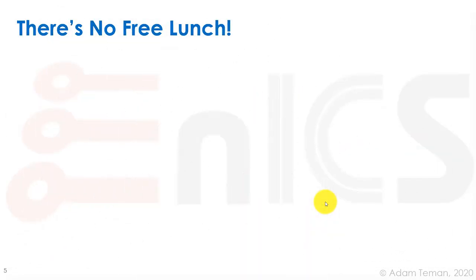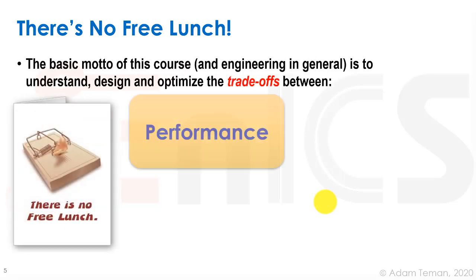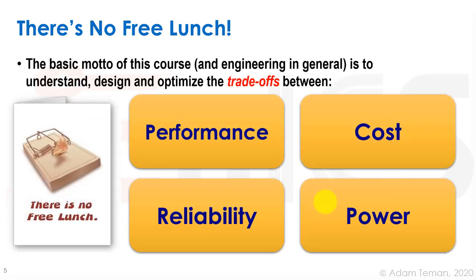We have to remember — and this is true of almost anything in engineering — there is basically no free lunch. Whatever mouse comes over and tries to eat this cheese, he's not going to have a free lunch. This is the basic model of the course and of engineering in general. We always have to know that we have trade-offs. Whatever we try to make better, there's a good chance we're going to make something else worse.